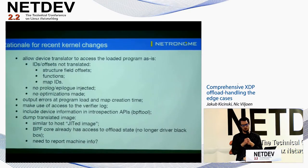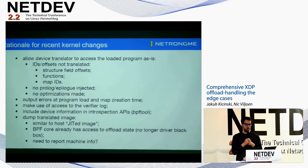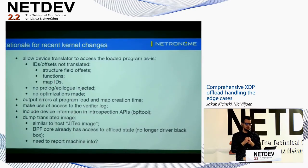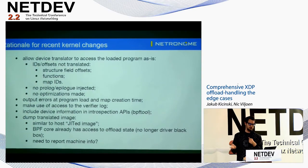Another problem with the old model was error reporting: the verifier log is a very useful and flexible tool for telling users why a program couldn't be loaded or offloaded, or what optimizations were applied. But if we ran verification for the second time inside the networking subsystem, there was no way to report it back to user space. Moving the device translation to the load stage solves this and makes error feedback much more natural.